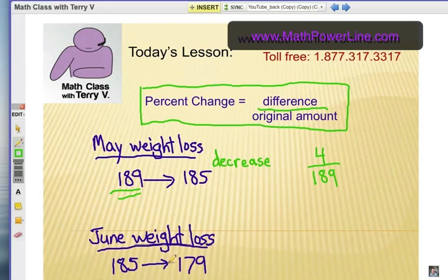In the bottom example in June, you went down six pounds, which yes, that's a bigger weight loss amount. But we got to see if that's more of a percent decrease than in May. So you're going to divide six by 185. Now in your calculator, you're going to do both of these. You're going to divide top number by bottom number.